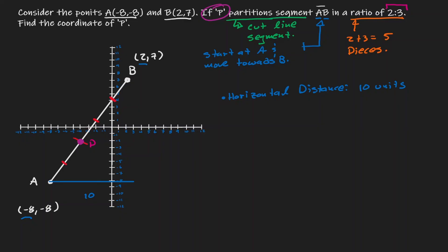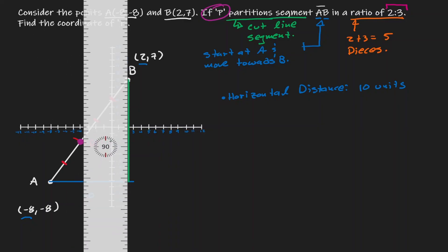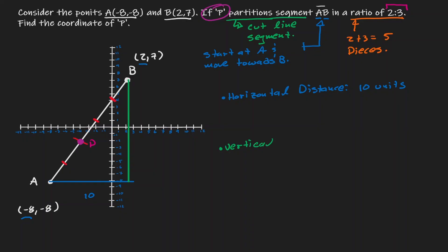Now let's define the vertical distance. To find that distance, let's find the difference of y's. If we start at negative 8 and go all the way to 7, that would be 15 units.